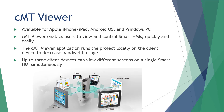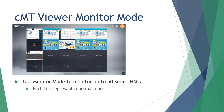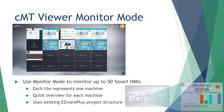Each Smart HMI can handle up to three connections simultaneously. An additional feature of the PC version of CMT Viewer is the monitor mode, which allows you to monitor up to 50 Smart HMIs at once. Each HMI is represented as a tile on the grid and provides a quick overview for each machine. The overview screen is customizable in EasyWare Plus.